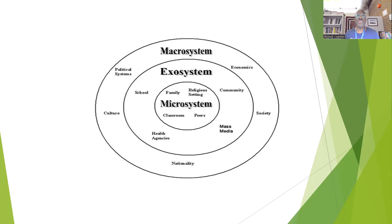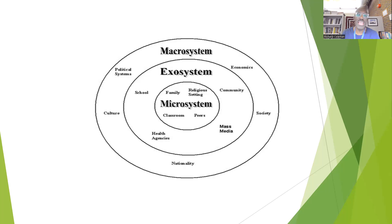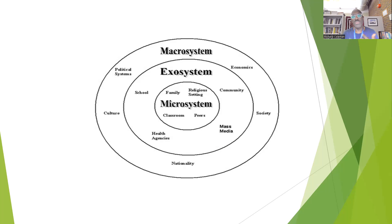At the far extreme, we have what's called the macrosystem. This is the large system that consists of the political system, various economic systems, educational systems, culture, our various society, and our nation in and of itself. It's the largest system of all.